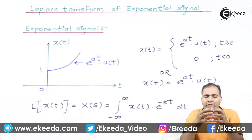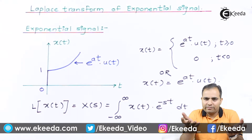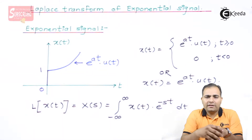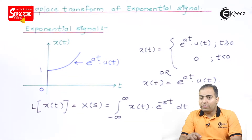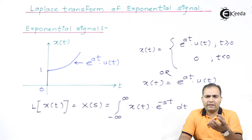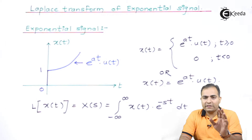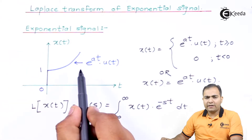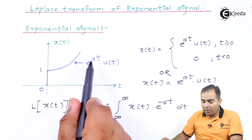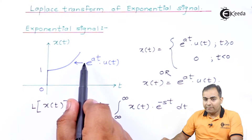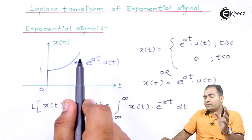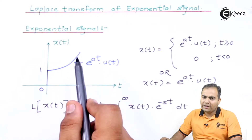Now I want to calculate the Laplace transform of an exponential wave. As I told you in previous videos, we are going to consider only a causal signal, that is a right-handed signal. I have placed an exponential signal but only as a right-handed signal. If the power of the exponential signal is positive, it is a rising exponential; if the power is negative, it is a decaying exponential.